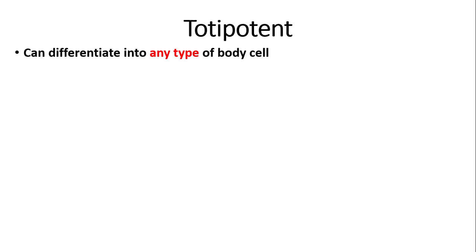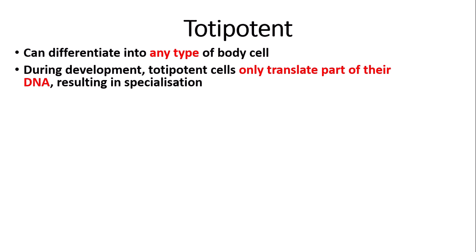Let's start with totipotent stem cells. Totipotent stem cells can differentiate into any type of body cell — any type of cell at all. A helpful memory trick is that 'totipotent' sounds like 'total potential,' so totipotent stem cells have the total potential to differentiate into any type of body cell. During development, these totipotent stem cells can only translate part of their DNA, so only certain genes are switched on, which results in specialization and differentiation.